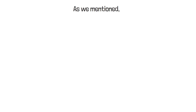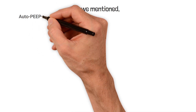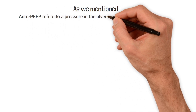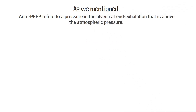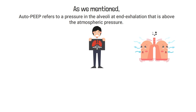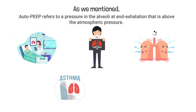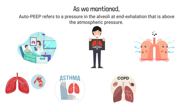Auto-PEEP refers to a pressure in the alveoli at end exhalation that is above atmospheric pressure. It often occurs in patients with obstructive lung diseases that require a prolonged expiratory time. Some examples include patients with asthma or COPD — because their airways are obstructed or constricted, the patient may have a hard time fully exhaling.